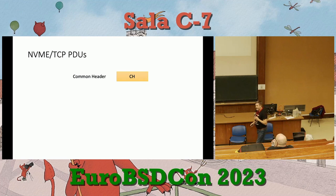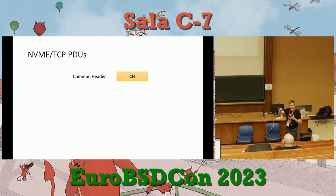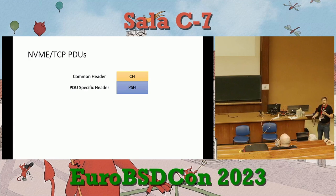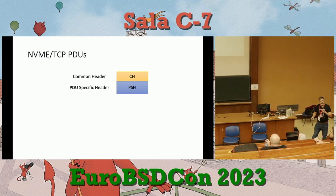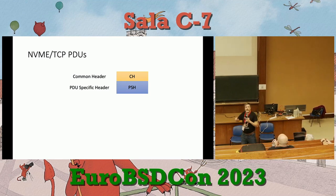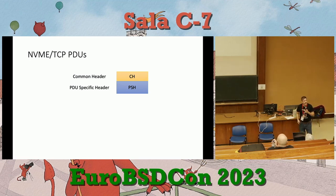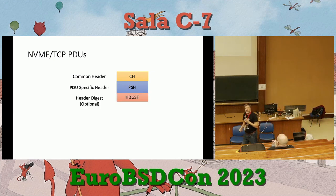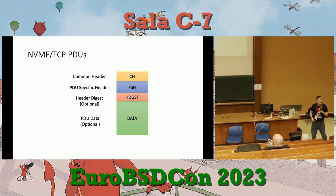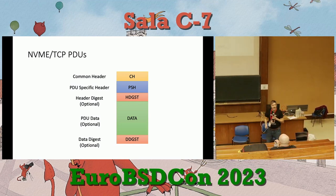All PDUs start with a common header — a fixed-size structure including the PDU type — followed by a PDU-specific header that varies in size. For example, error-reporting PDUs include the header of the PDU that triggered the problem and which field was incorrect. Then there's an optional header digest if negotiated, a data region if the PDU contains data, and an optional data digest — both negotiated during connection setup.